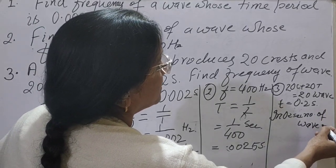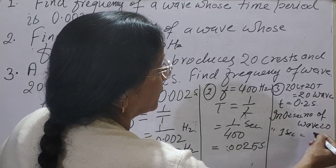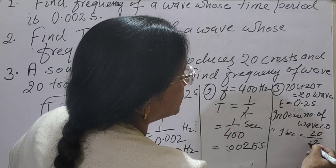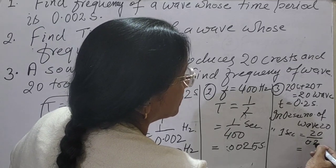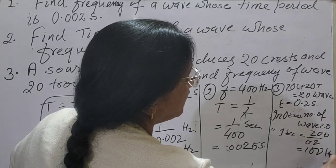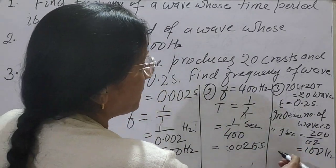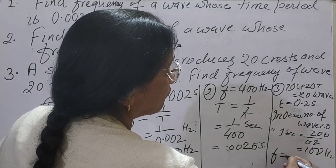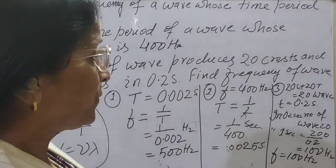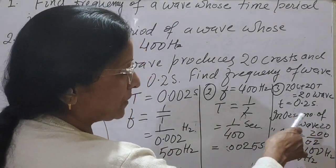In 0.02 second the number of waves is 20. So in 1 second the number of waves will be 20 by 0.02, which equals 1000 divided by 10, giving us 100. So 100 waves are produced per second. Number of waves in 1 second is called frequency, so the frequency is 100 hertz. By unitary method we got the answer.